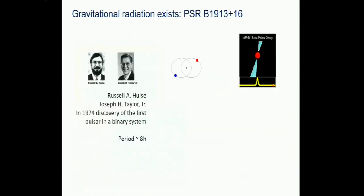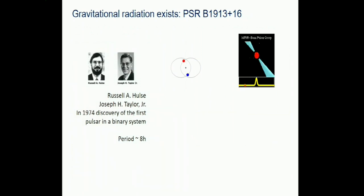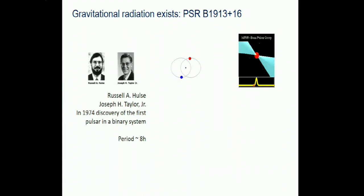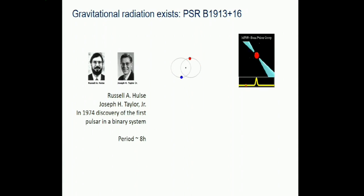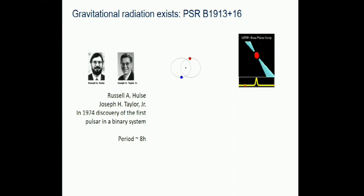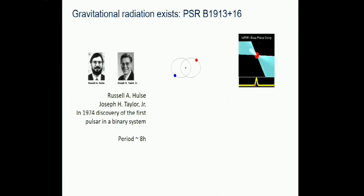Einstein had a strange relationship with gravitational waves - he was always not completely certain whether they were artifacts of the choice of coordinate systems or whether they are real. This confusion lasted for quite a long time, until about 1957.